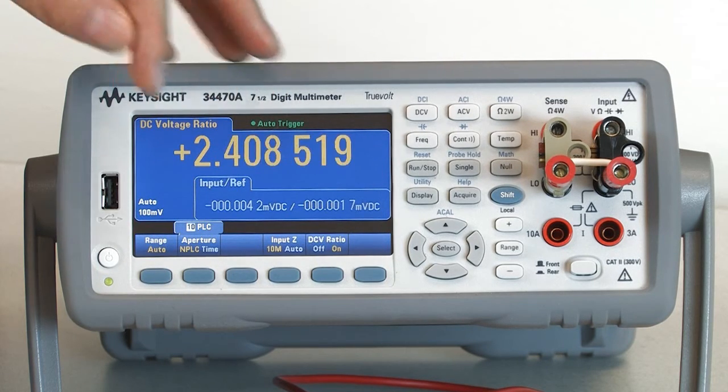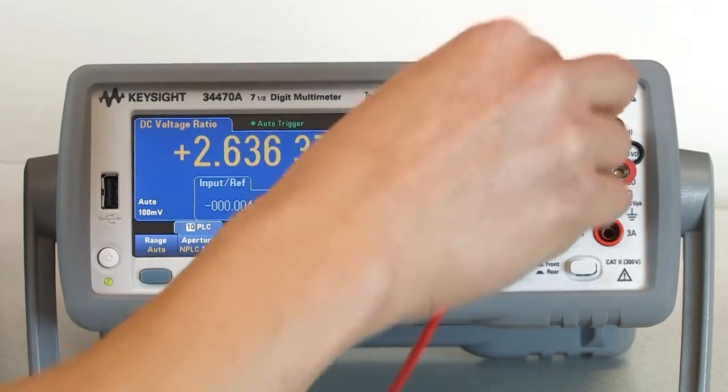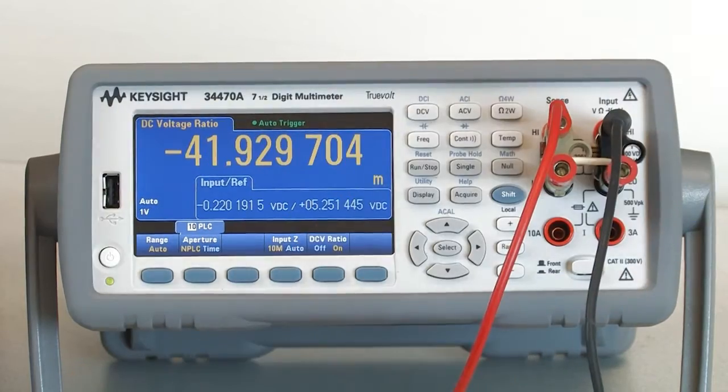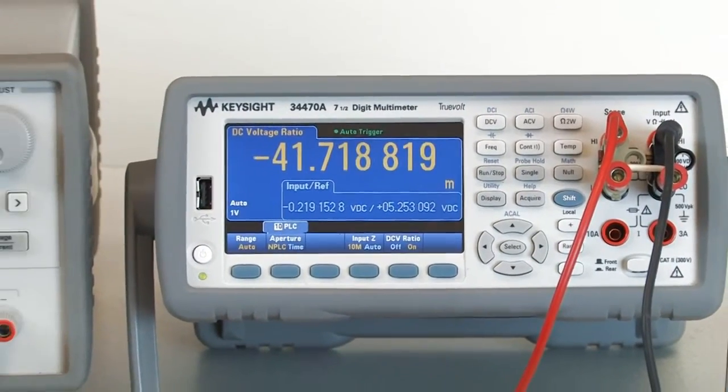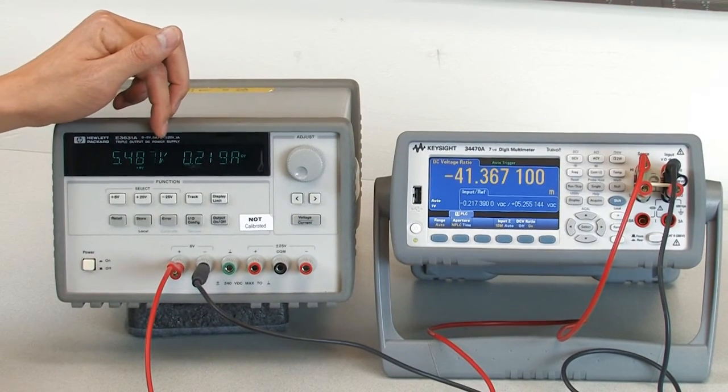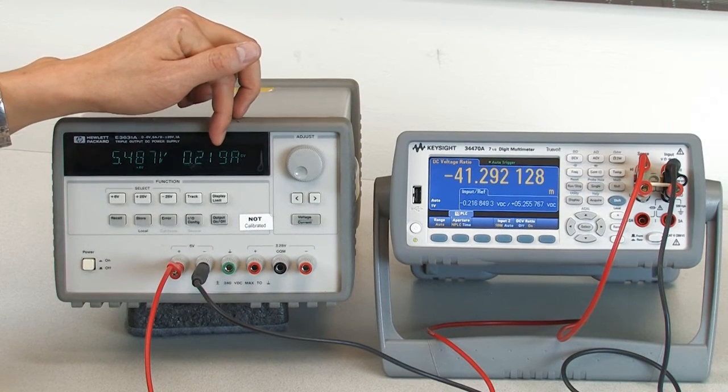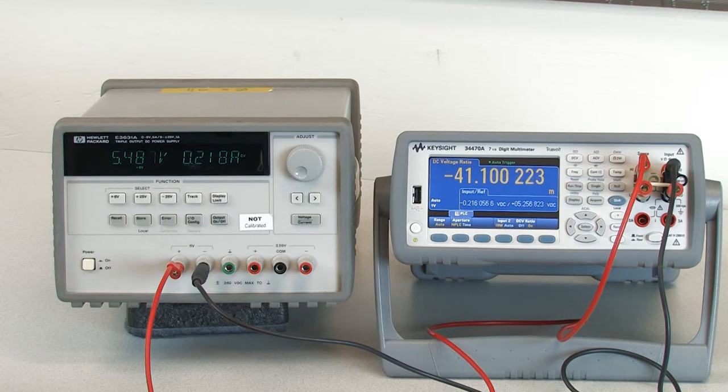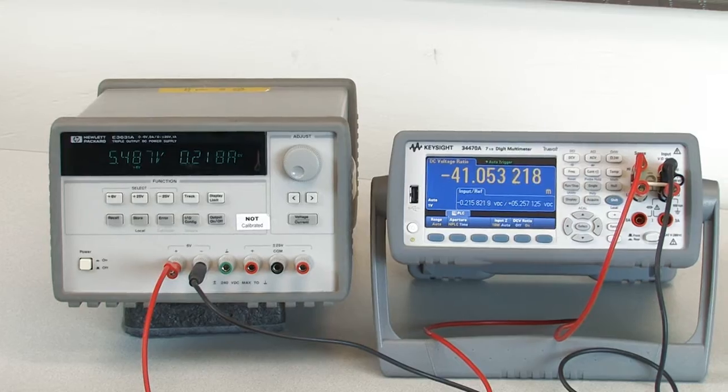And now what I'm going to do is connect up my power supply to the circuits. And on the power supply, you see that the power supply is outputting 5.487 volts, and it believes that it's outputting 0.219 amps.